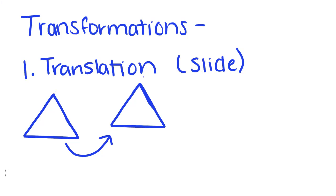First is the translation, more commonly known as the slide, where we just take—this is triangle A, and this is still triangle A. It's the same triangle, we just took it and moved it over and up.